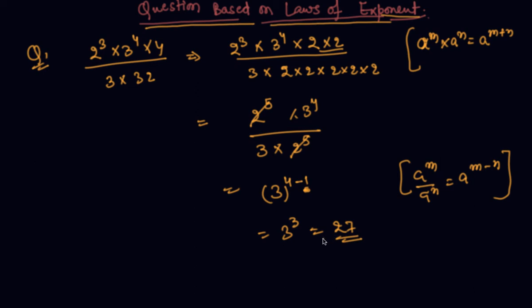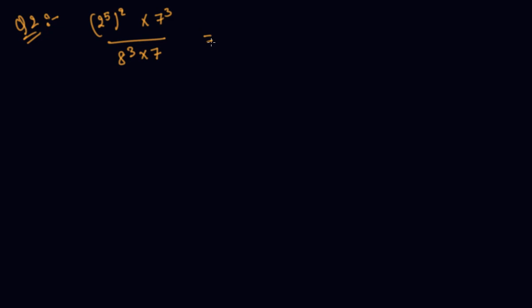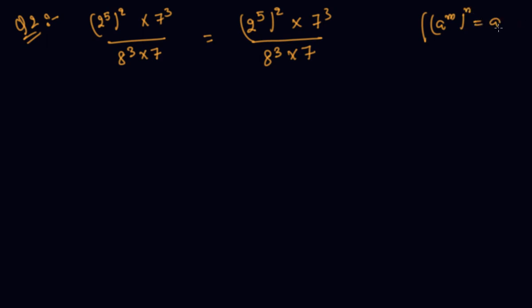These are typical questions which might come into the exam, so please be attentive. Now I am moving to another question. We are given 2 raised to power 5, raised to power 2 — a power of a power. As I told you in my previous lecture, whenever there is a power of a power we multiply both powers, meaning a raised to power m raised to power n equals a raised to power m times n. So I can write 2 raised to power 10, into 7 raised to power 3.